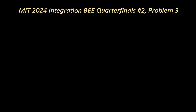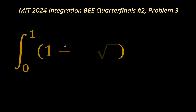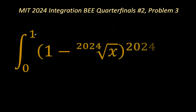Welcome to Everyday Mathematics. Today's problem comes from the MIT 2024 Integration Bee quarterfinals, number 2, and the problem we'll be looking at is problem number 3, which is the definite integral from x equals 0 to x equals 1 of open bracket 1 minus the 2024th root of x, close bracket, to the power 2024.